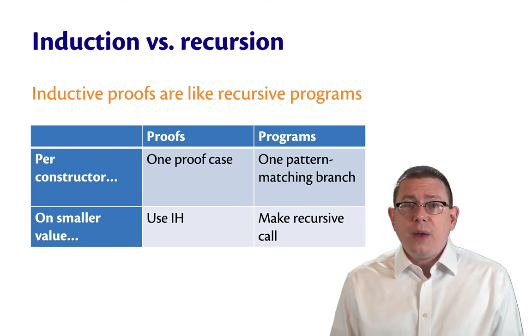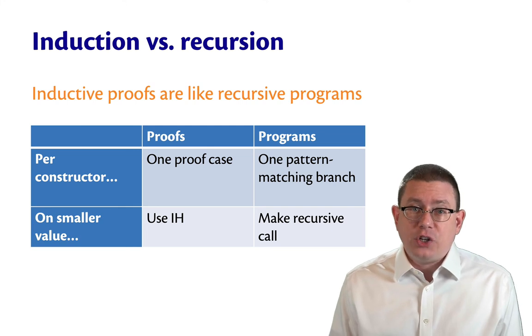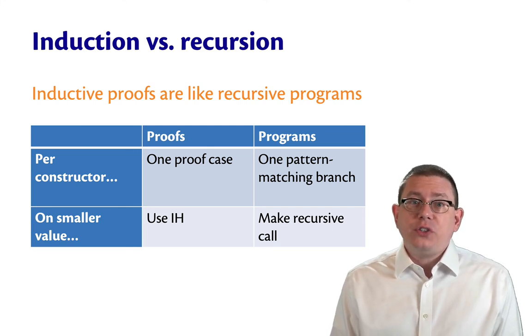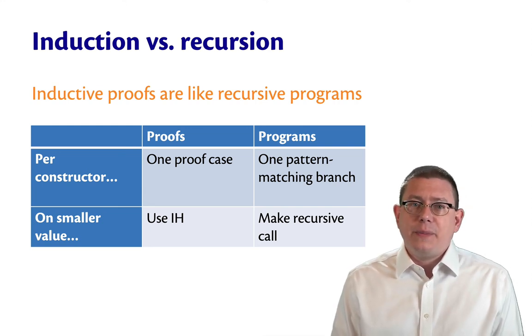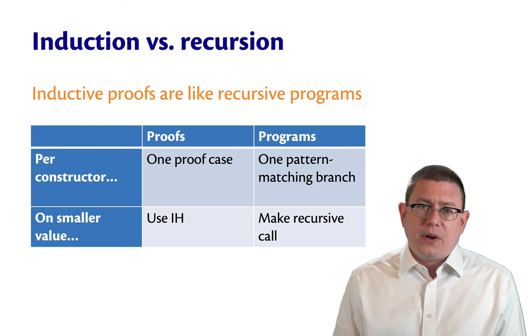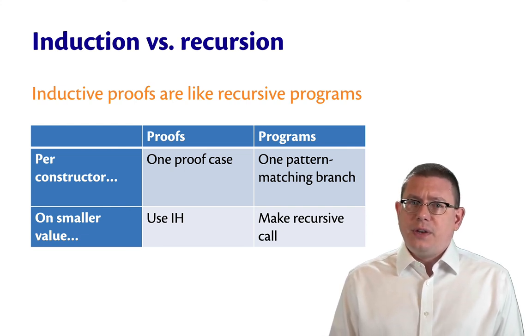Similarly, when we write programs, if we're writing a function on one of these data types, we typically will have one pattern matching branch per constructor in that function. So if you want to know what the length of a list is, you have a pattern matching branch for nil and one for cons. If you want to know what the size of a tree is, you have a branch for leaf and a branch for node.